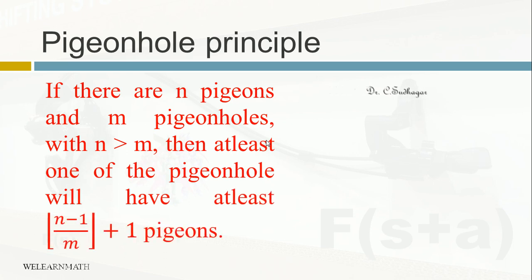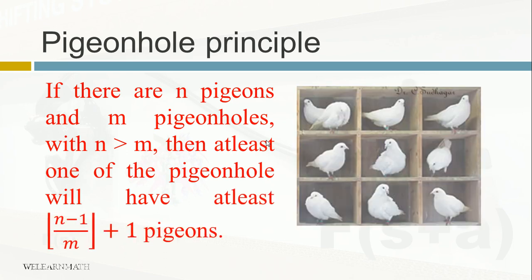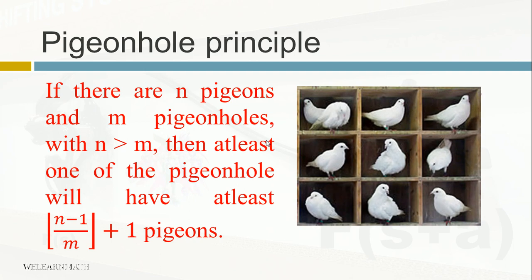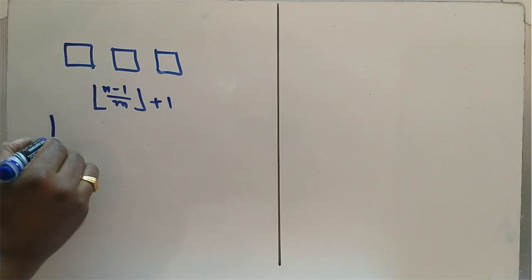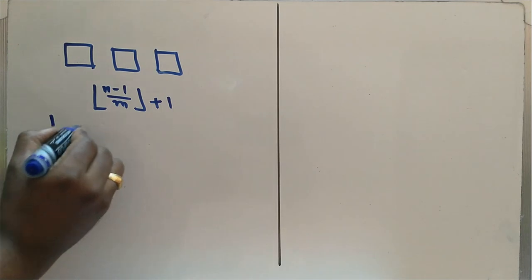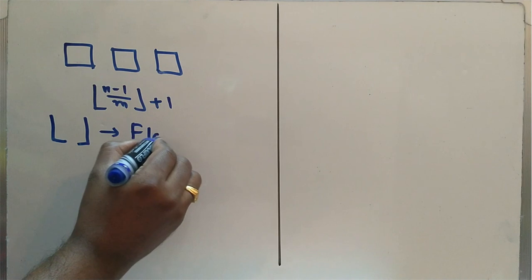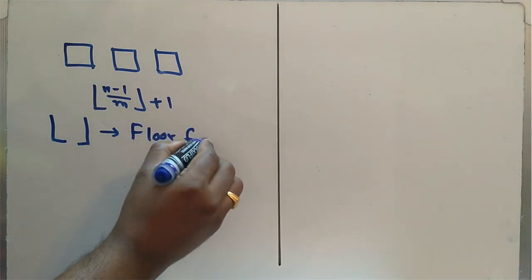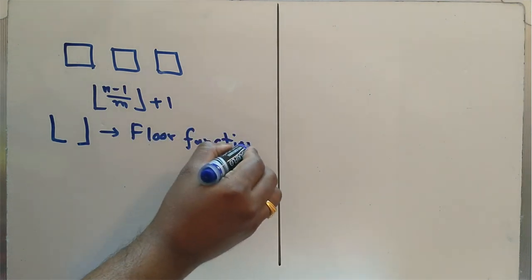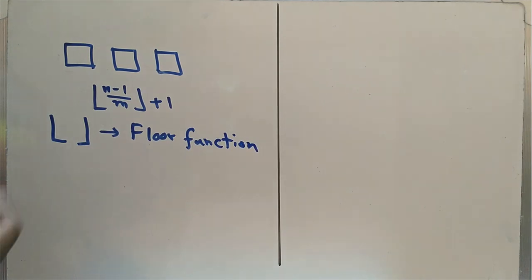Here we are using a new symbol. Please note down the symbol. The symbol is like this, one line with a floor line, the floor line. So we call this as a floor function. So before going to see how the rule is working, let us see what is the definition of this function.